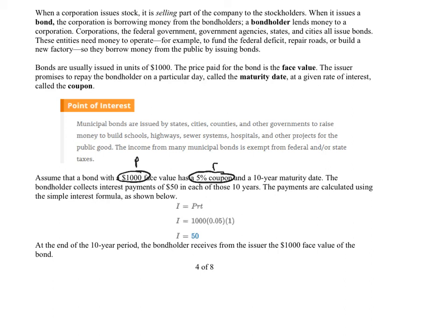And then there's a 10-year maturity date, but we have to be very, very careful. So we have to look at what they're actually asking for. It says the bondholder collects interest payments of $50 in each of those years. So what they chose was to do T equals 1. This gives you your annual interest.